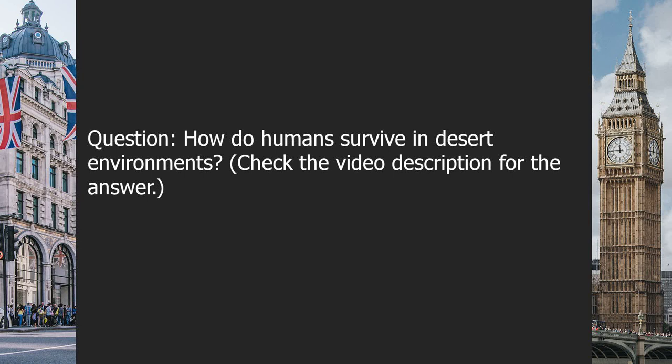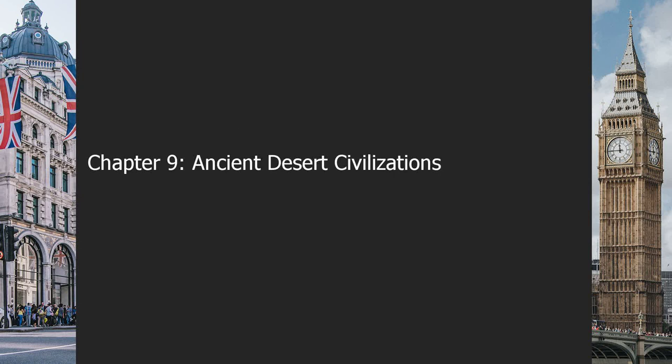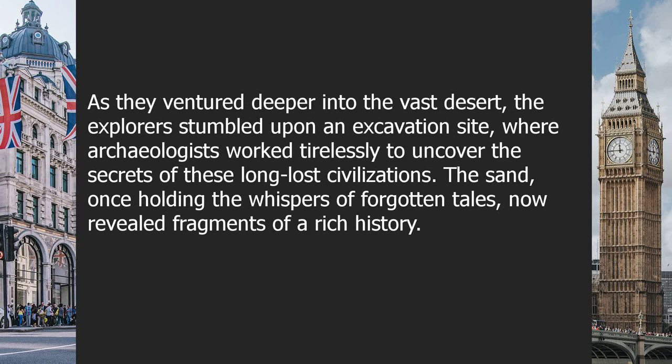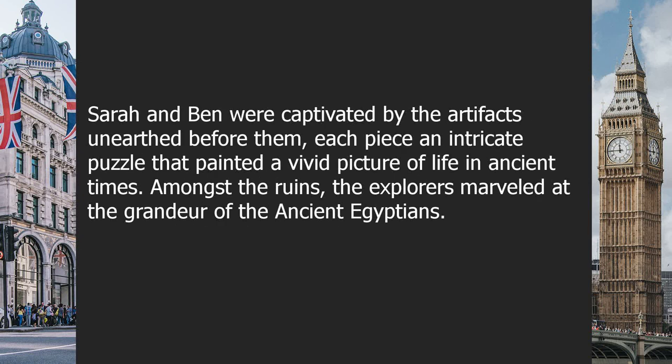Chapter 9: Ancient desert civilizations. In the heart of the desert, where the scorching sun kissed the sand dunes, lay the remnants of ancient desert civilizations. Sarah and Ben's journey brought them face to face with the enigmatic legacy of the past — the ancient Egyptians and the Nabataeans. As they ventured deeper into the desert, they stumbled upon an excavation site where archaeologists worked tirelessly to uncover the secrets of these long-lost civilizations. Sarah and Ben were captivated by the artifacts unearthed before them, each piece an intricate puzzle that painted a vivid picture of life in ancient times.